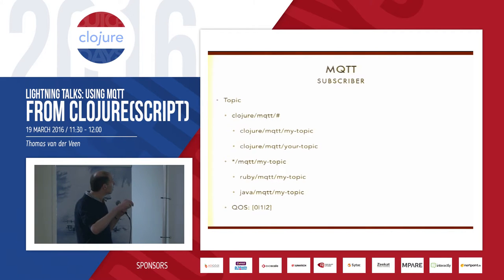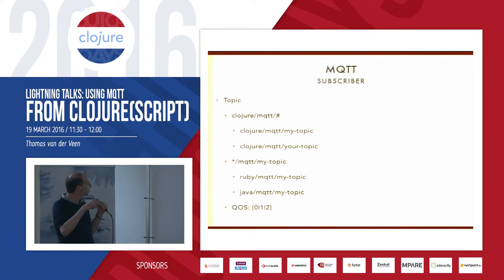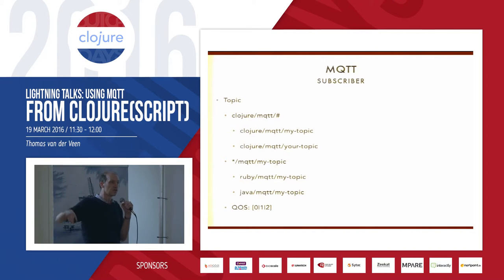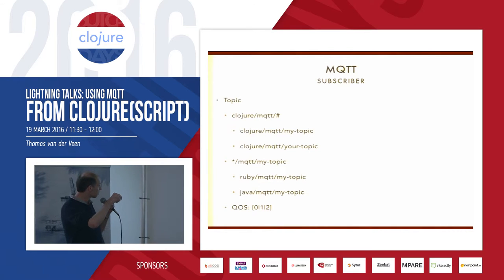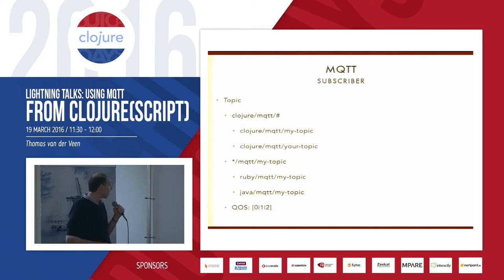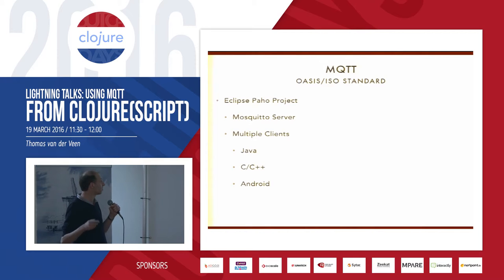Subscribing is the other very simple thing. You subscribe to topics and you have wildcards. The hash at the end means you get every message for 'clojure/mqtt/my-topic' and 'clojure/mqtt/your-topic' — everything under that. You can also have wildcards at the start — so Ruby/mqtt/my-topic and Java/mqtt/my-topic. You specify the quality of service. And that's basically the whole protocol in a nutshell.